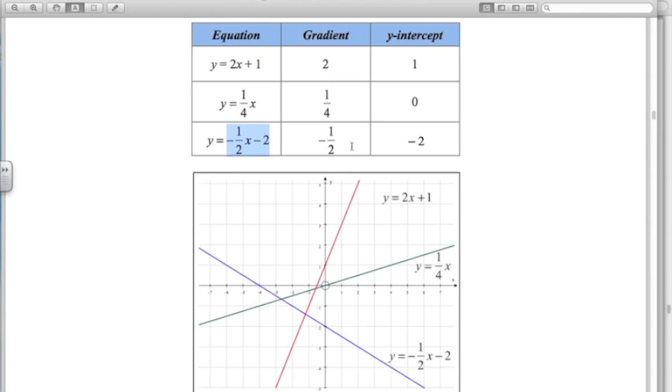For the blue line, the y-intercept is negative 2, so we start at negative 2 and the gradient is negative 1 half. So we go down 1 across 2, negative 1 over 2.